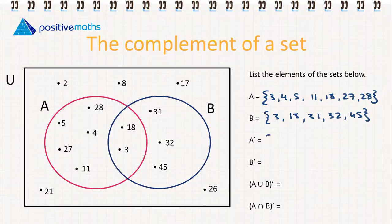The elements in A complement. So all of the elements in the universal set but not including the ones that are in A. So this is going to include 2, 8, 17, 21, 26, 31, 32, and 45.